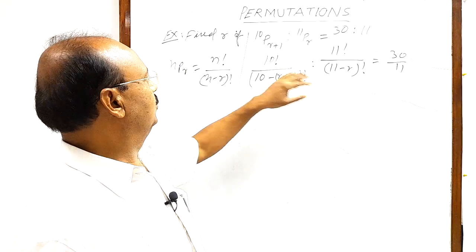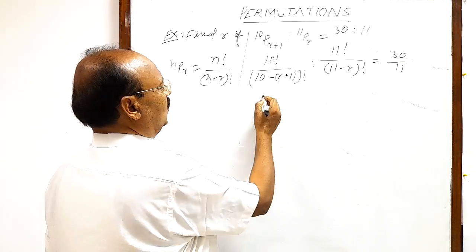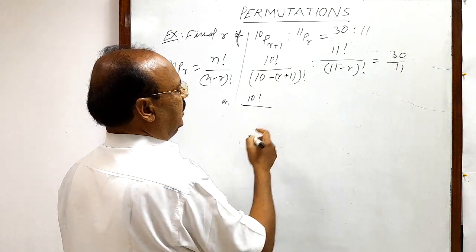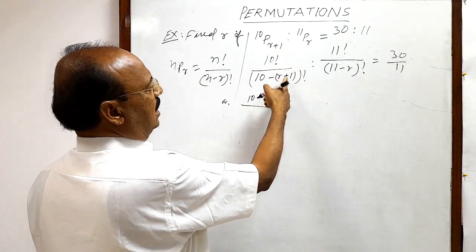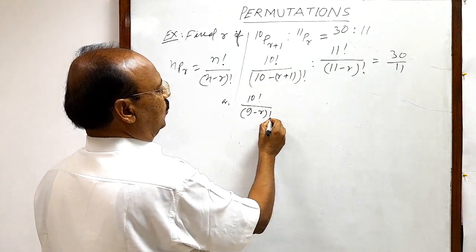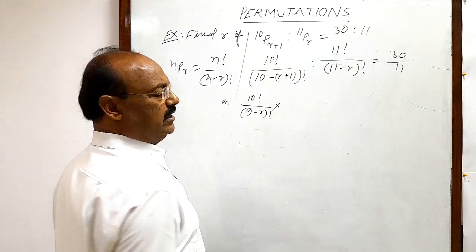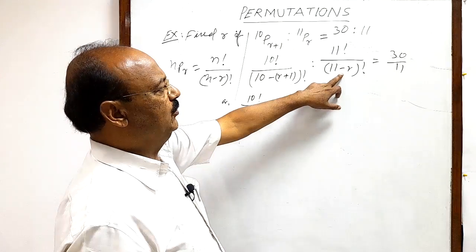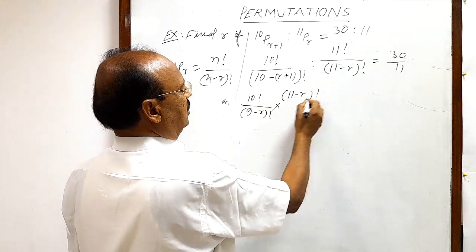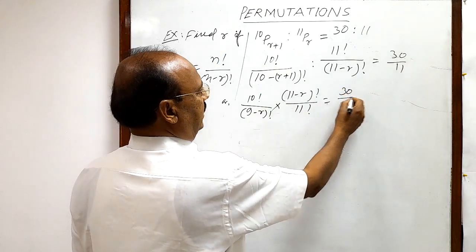Let us simplify it to get the value of R. This is 10 factorial divided by (9 minus R) whole factorial. This division can be written as multiplication also, so this will become numerator — 10 factorial — and (11 minus R) factorial by 11 factorial in the denominator. This is equal to 30 by 11.